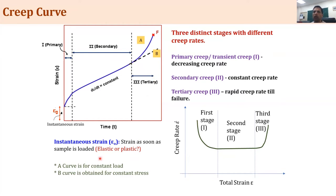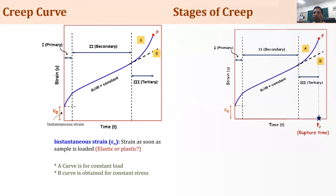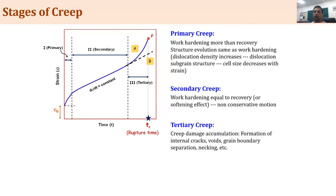The important things here are: instantaneous strain, three stages (primary, secondary, tertiary — also called stage 1, 2, and 3), and that stage 2 has the lowest creep rate.